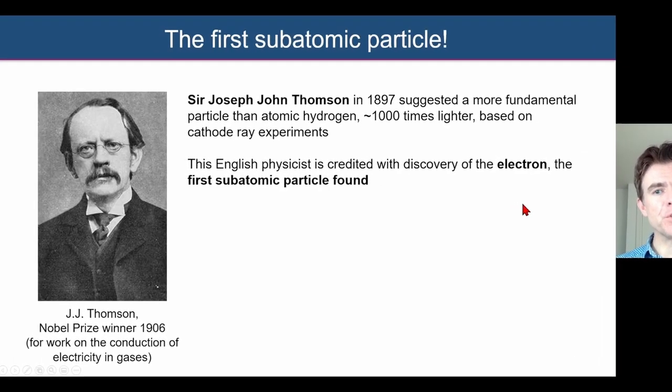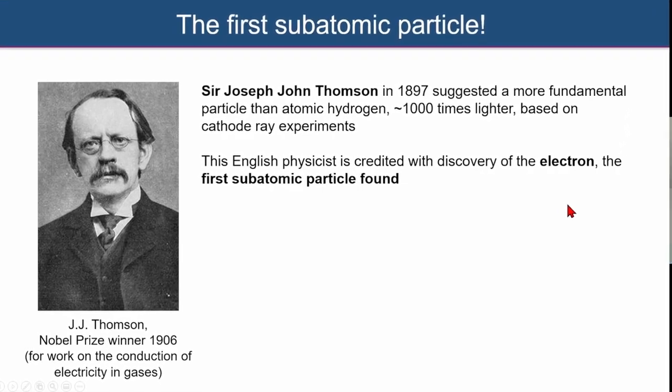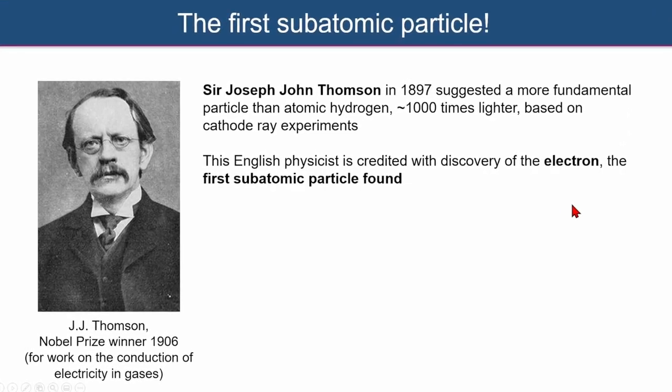So the electron was the first subatomic particle discovered. And it was J.J. Thomson in 1897 who suggested that there was, in fact, a more fundamental particle than atomic hydrogen, which was thought to be the most fundamental particle around about that time. And that this particle that was proposed by J.J. Thomson was about 1000 times lighter than atomic hydrogen. And so he's credited with discovery of the electron and he got a Nobel Prize in 1906 for his work on conduction of electricity in gases. And in fact, that is what cathode ray tubes really are all about, conducting electricity through gases, as we'll see in a moment.